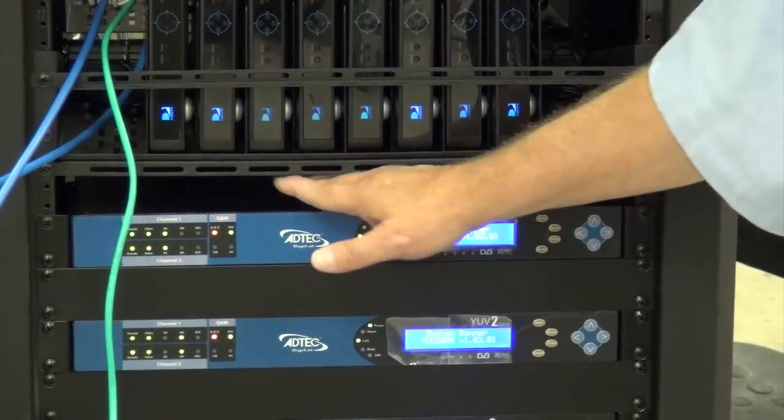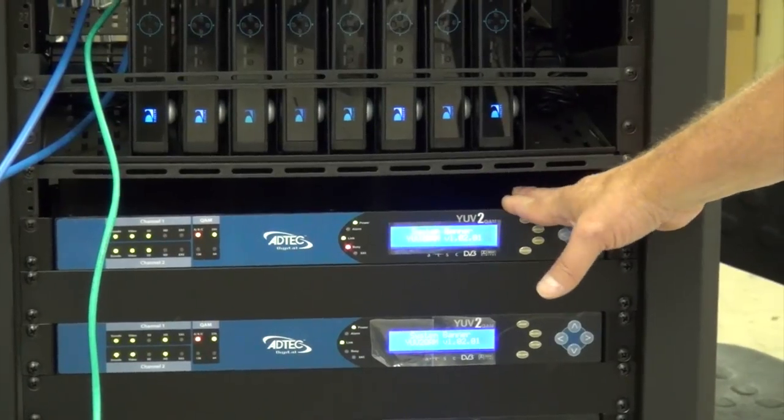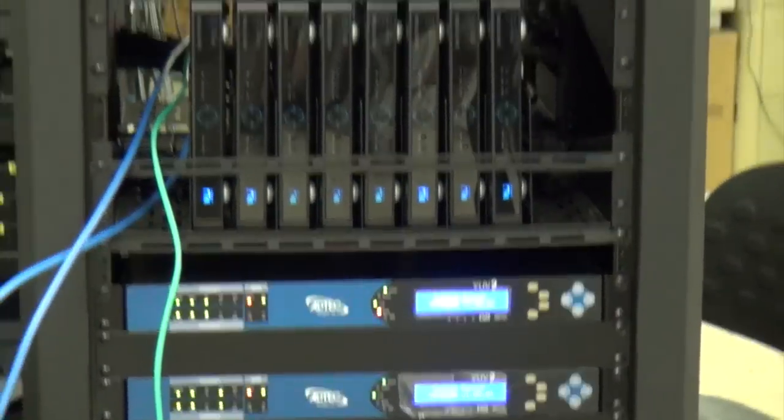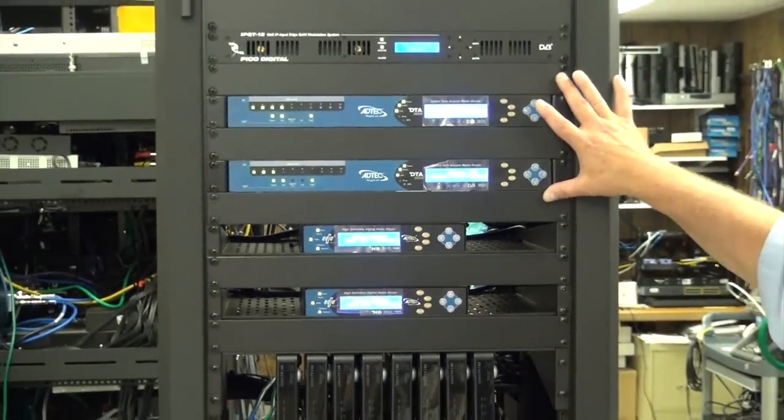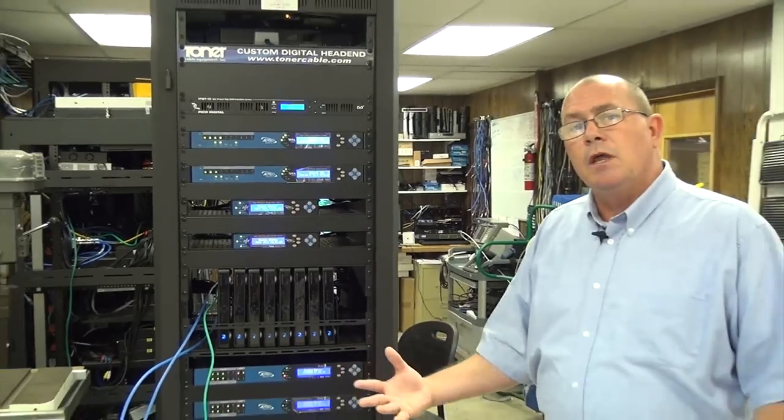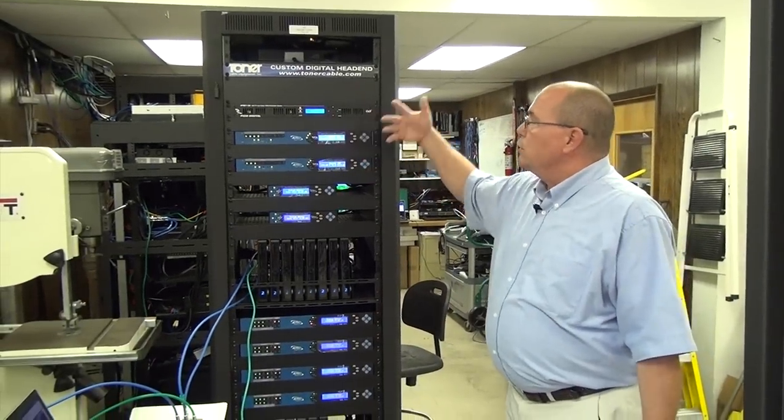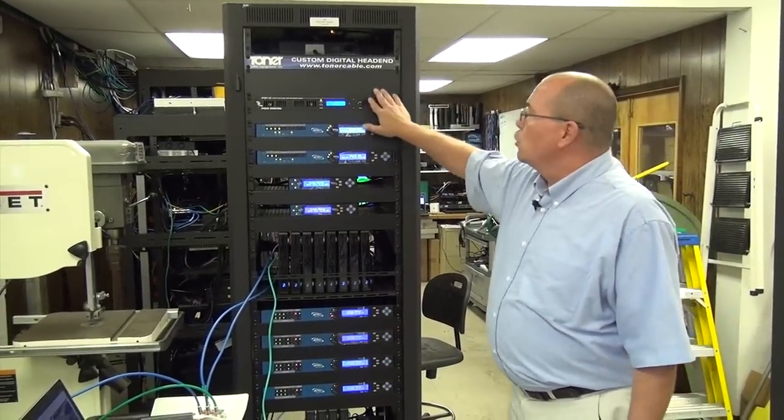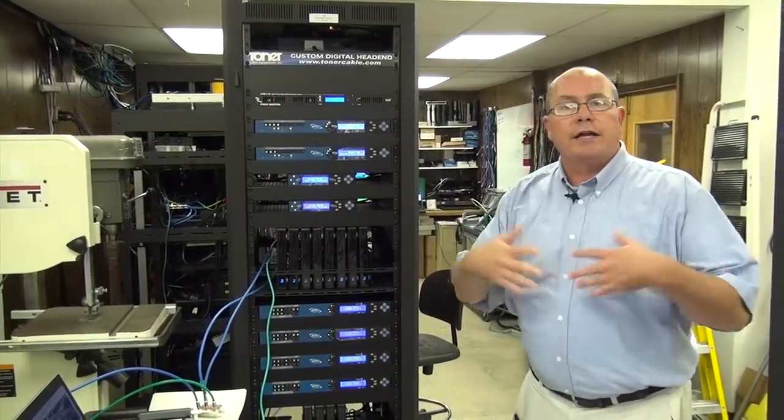In this particular case we're using the ASI outputs of our encoders to a multiplexer. Then our multiplexers take that content and turn it into an IP stream and the IP streams go into a network switch which in turn go into our EdgeQAM to turn it around to copper.